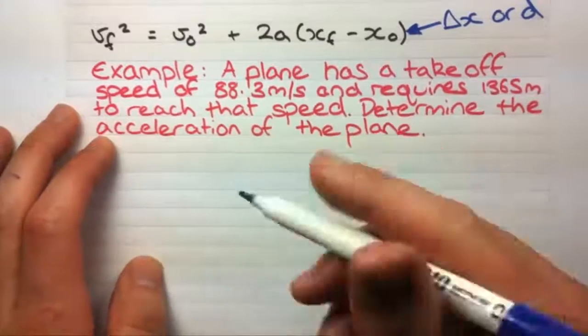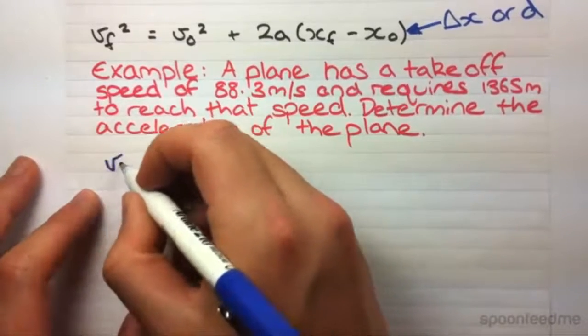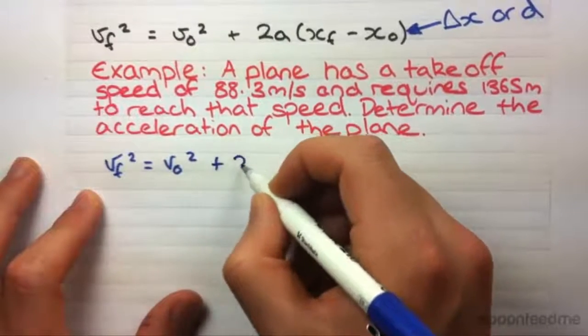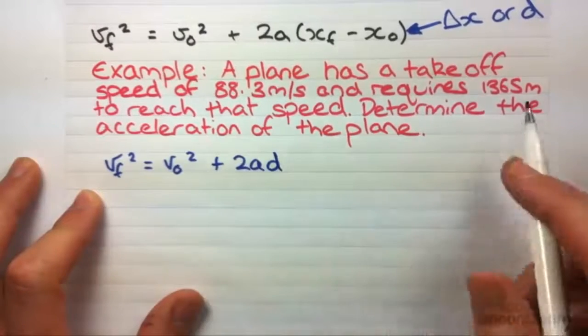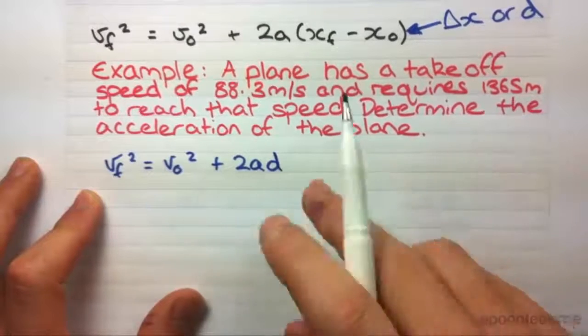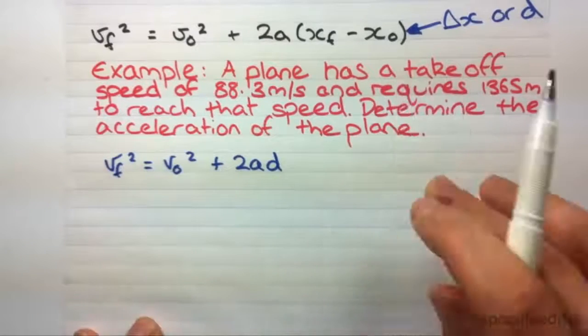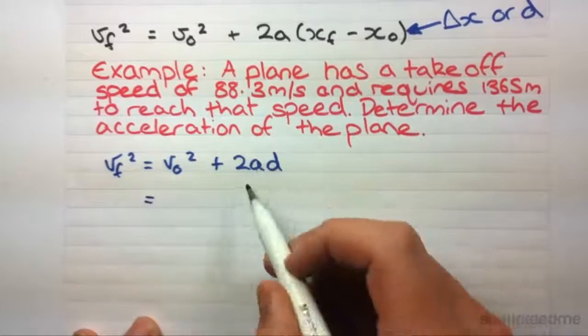This is the most complicated one we've done so far. You'll see why in a second. First thing starts exactly the same way. I'm just going to write d because they've given us a d, not a final and initial displacement. So, that makes it a bit easier. Now, what are we trying to find? We're trying to find acceleration. So, we actually have to rearrange this. That's why this is the most complicated.